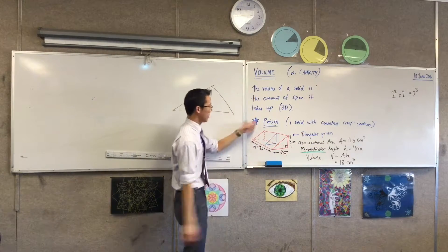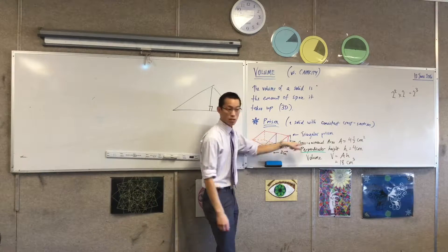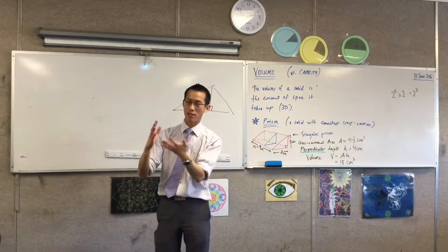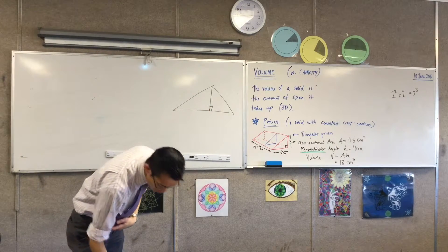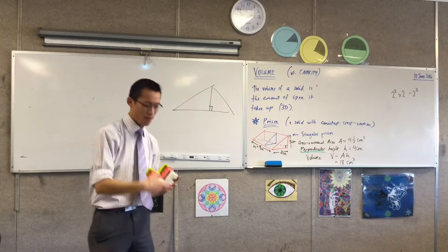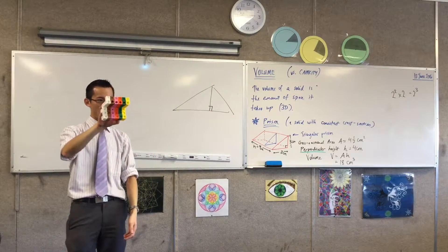Now what's lovely about this, and this is why the heading was prism, is you can have a prism which has a square on the edge, or a circle, or a rectangle, or any shape you like. You don't even need to have a name for the shape. So long as it's consistent all the way along, you cut up the same thing.